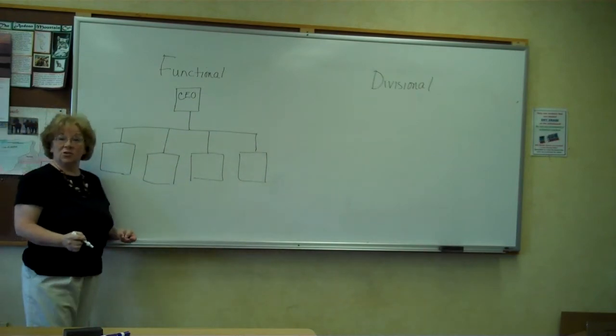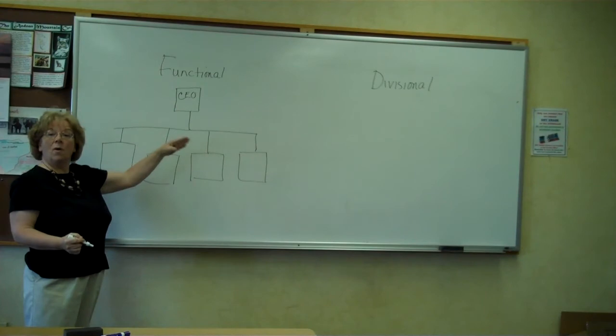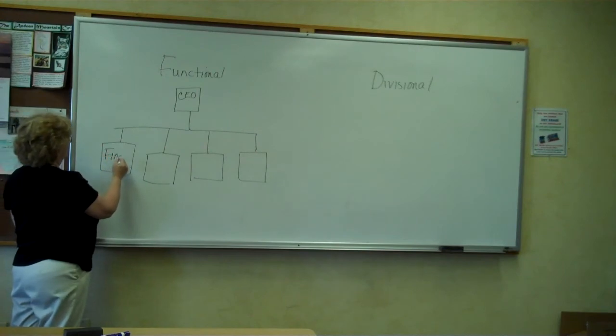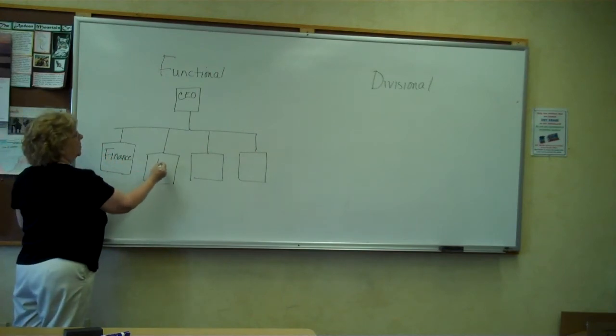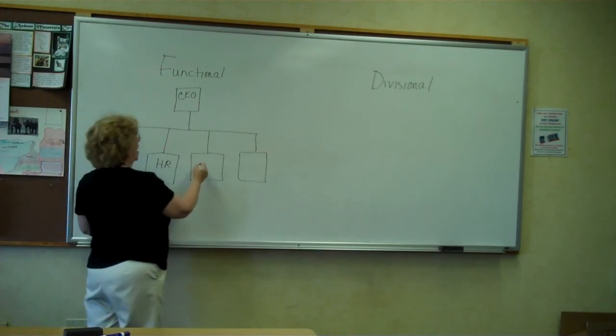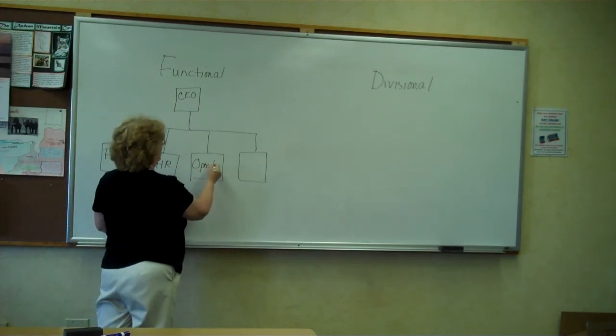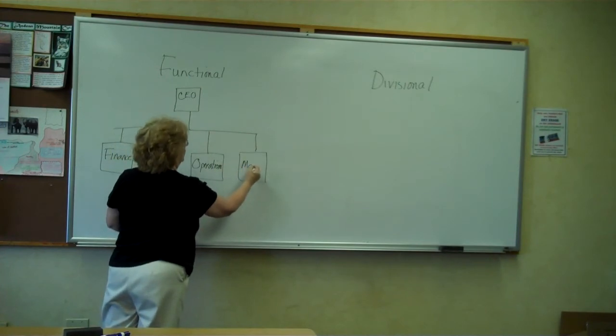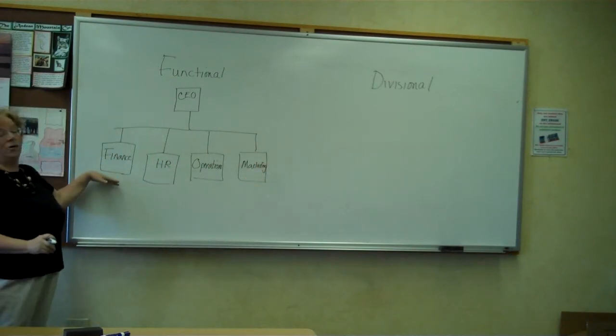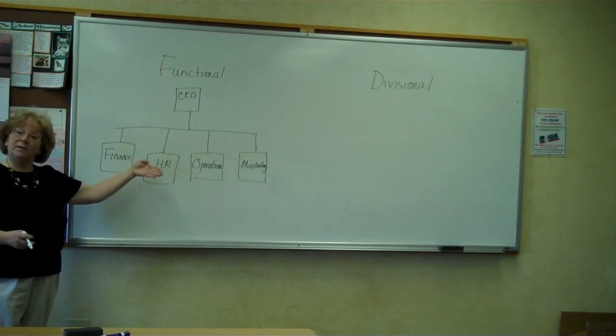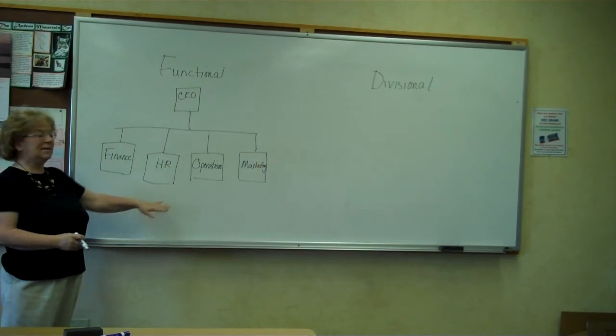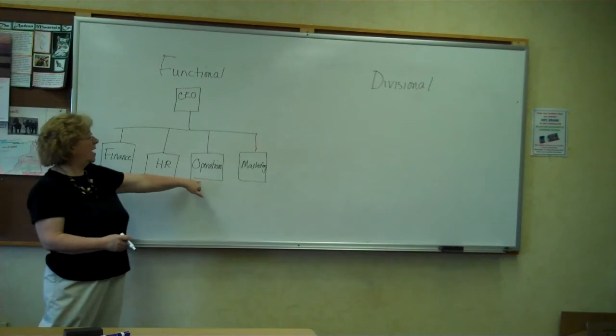With the functional organizational structure, reporting to the CEO are the various business disciplines or business areas. So we might have finance, human resources (HR), and let's say this is a manufacturing company. Operations might be another function, and let's try marketing. Again, you can have any number of functions. It really depends on what's important to the business and what types of activities occur in the business. But we'll use these four as an example: finance, HR, operations, and marketing.